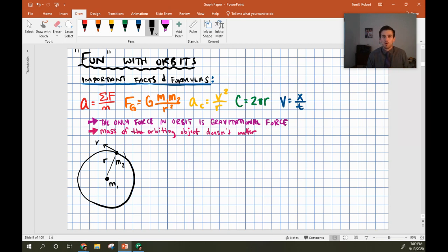With all that stuff together, we can start doing things with orbits. I'm not actually going to answer a question here. In orbit, the only force is gravitational force, and the mass of the orbiting object just doesn't matter. I'm going to derive some general orbital formulas and show you how you mix and match all these formulas together.